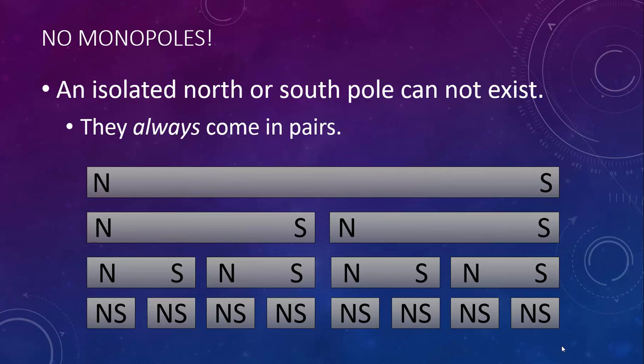If this bar magnet was made of iron, we would eventually end up with a whole bunch of iron atoms, each of which is its own little magnet with a north and south pole.